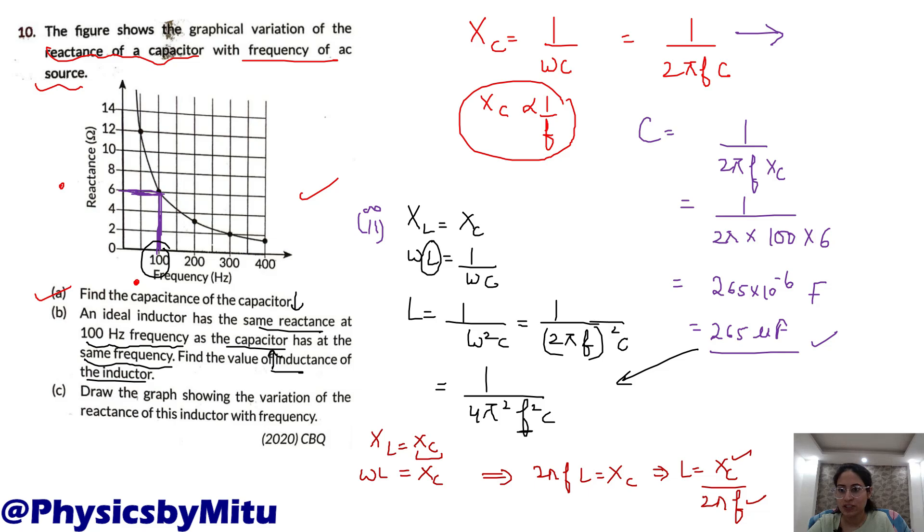XC or f value, you can choose where to put it. XC is 6, f is 100 and 2 pi put it. You will get value of L 9.6 into 10 to the power minus 3 henry or 9.6 milli henry. This is your answer.